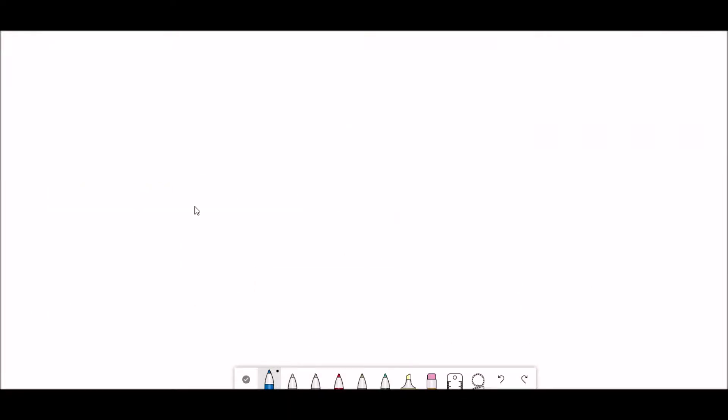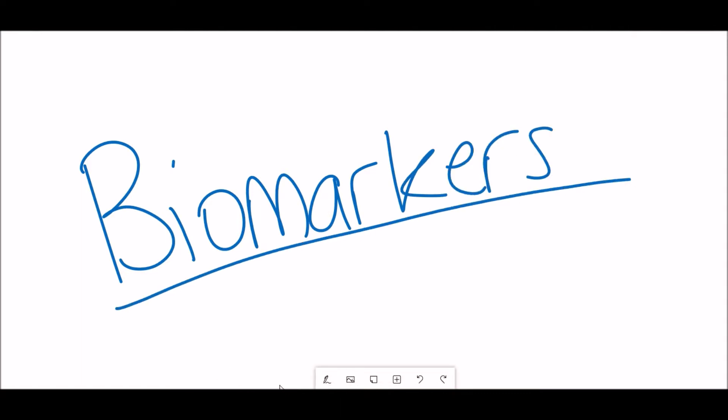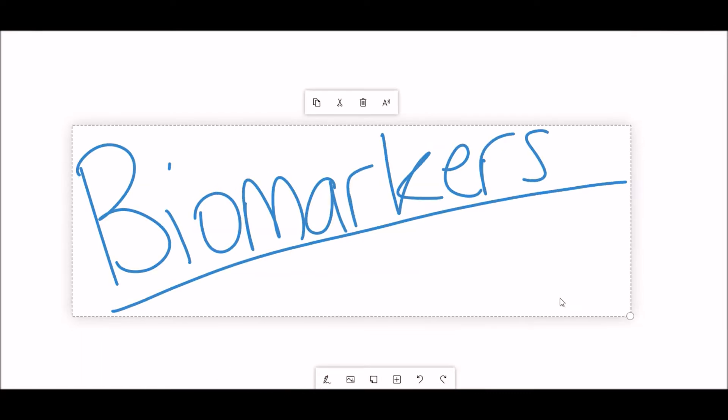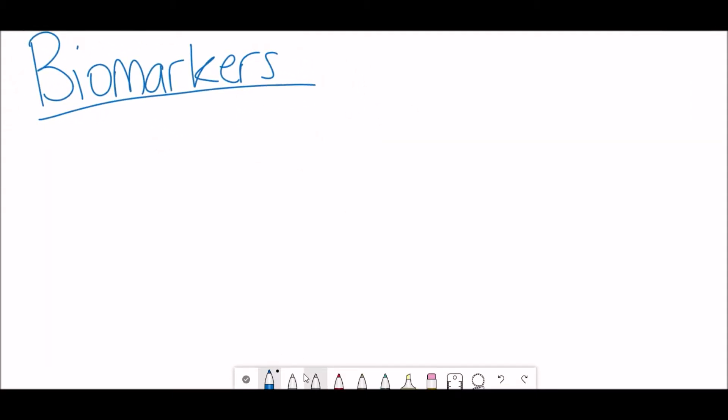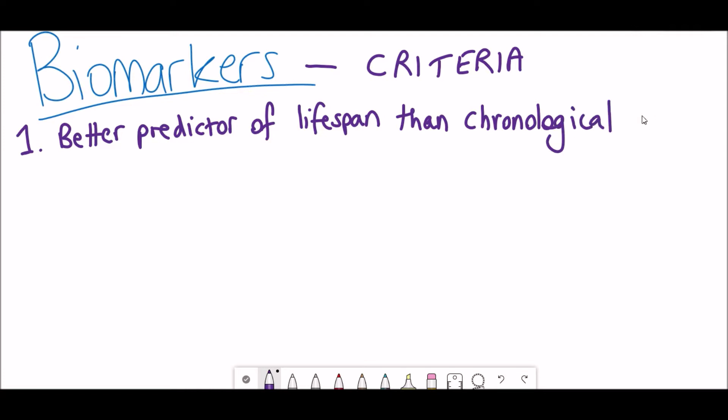So given that we observe changes in epigenetic marks during aging, can we use and identify these epigenetic marks to determine somebody's biological age? The concept that I'm describing here is also referred to as biomarkers, and so the idea is that we want biomarkers to identify and validate interventions that could extend the human health span and lifespan. But to be regarded as a biomarker, it must fulfill certain criteria.